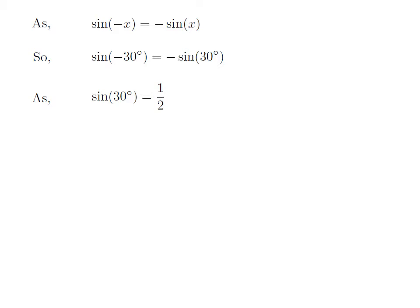We know the value of sine of 30 degrees is equal to one-half. So, we get the value of sine of minus 30 degrees is equal to minus one-half.